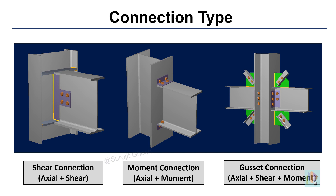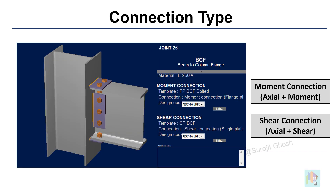Apart from these three types, we can also combine multiple connection templates and assign different shear and moment connections to a joint. For example, we can assign a shear tab along with a flange plate at a joint, which behaves like a shear plus moment connection, where both connections are designed for individual forces. If a specific template is not available under combined connection, we can still design it using multiple templates. There are a few tricks to assign a mixed connection to a joint using the customized button — I'll cover this later.